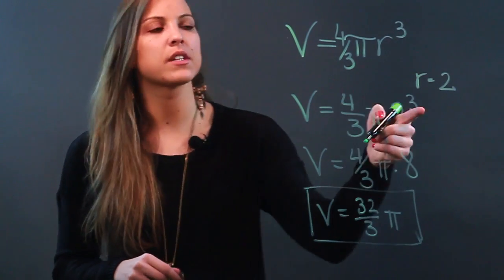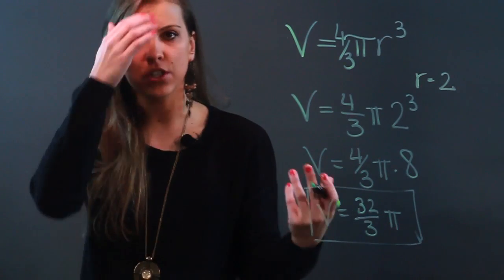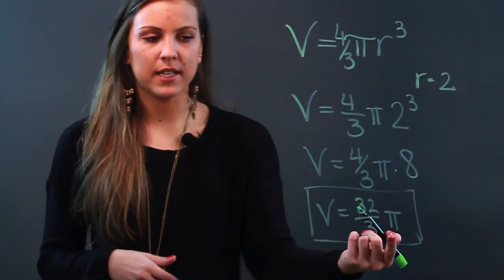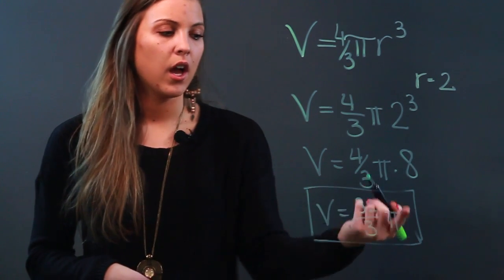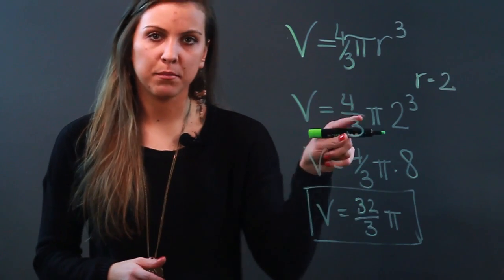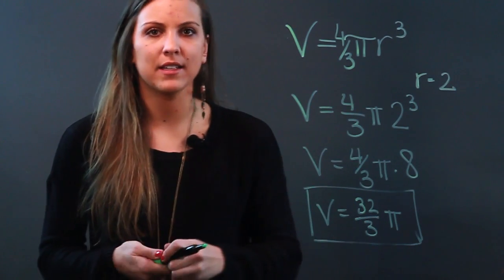The volume of this specific sphere with a radius of 2 would be 32/3 pi. If your teacher asks you to use 3.14 as an estimate, you just plug in 3.14 and multiply it by this fraction. Or if she asks you to use the exact pi button in your calculator, you go ahead and do that. Otherwise, leaving it 32/3 pi is accurate as well.